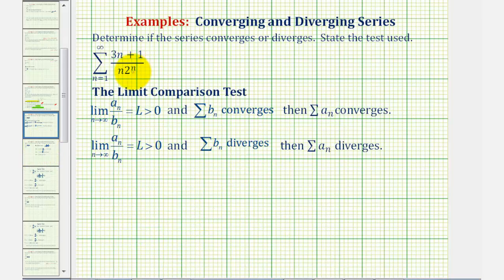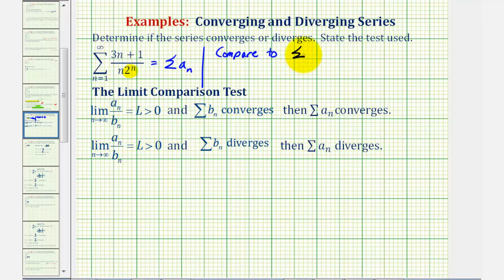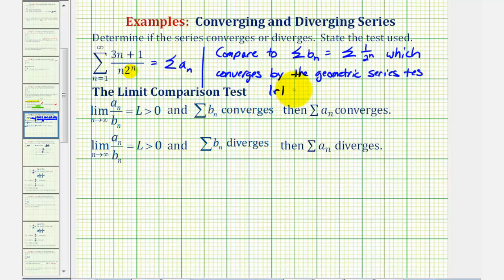So let's start by reviewing the limit comparison test. To perform the limit comparison test, we first have to decide what series to compare it to, and also know if the series we're comparing to is convergent or divergent. Because we notice that this resembles a geometric series — since we have two raised to the power of n in the denominator — we'll compare it to a known converging geometric series: the summation of one divided by two to the n. So let's let the given series be the summation of a sub n, and we'll compare this to the summation of b sub n, which is the infinite sum of one divided by two to the n, which converges by the geometric series test with |r| = 1/2, which is less than one.